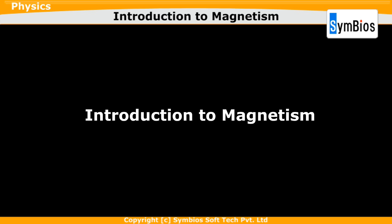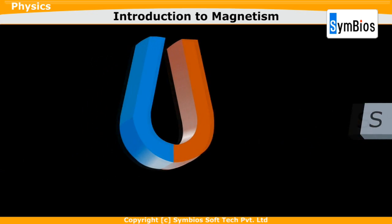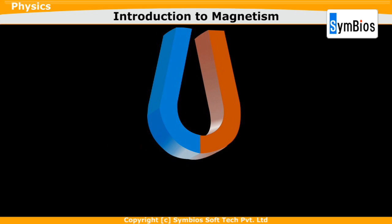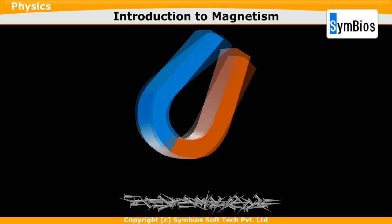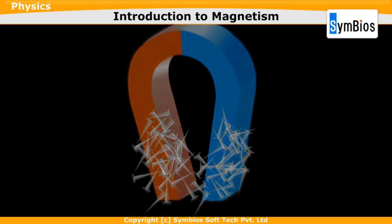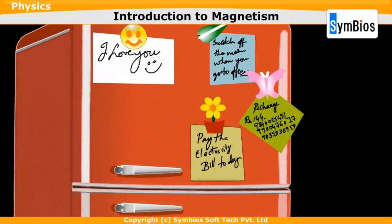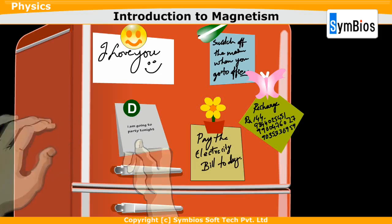Introduction to magnetism. Most of us are familiar with magnets. We find them in various forms in our daily life. You must have noticed iron nails getting attracted to a piece of a magnet. Then there are magnets that we use to stick notes on our fridge.